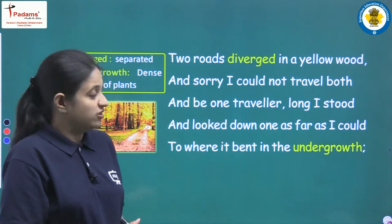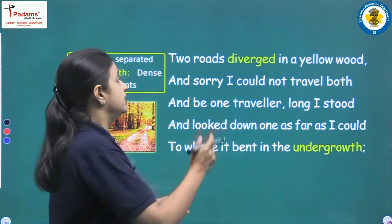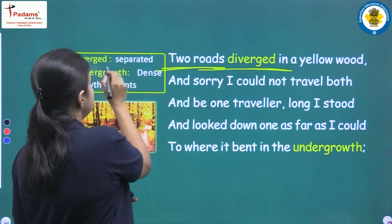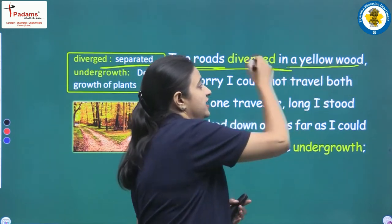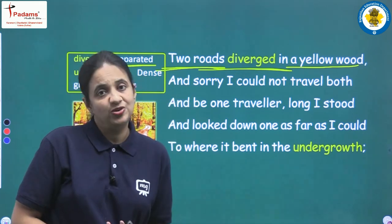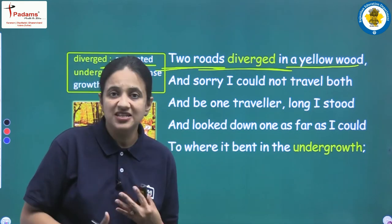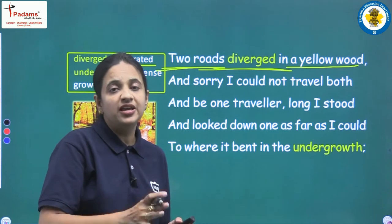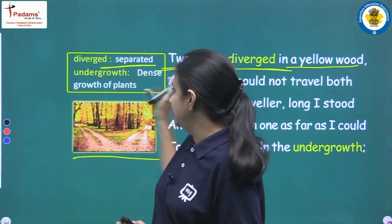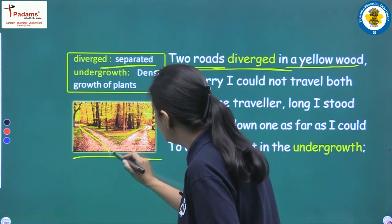In this opening stanza, the poet describes a scene. There are two roads that have diverged — meaning separated — in a yellow wood. Yellow wood represents the autumn season, when leaves turn yellow. The poet is standing before these two separate roads in a forest during autumn.